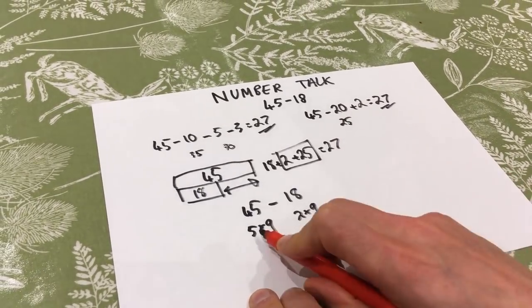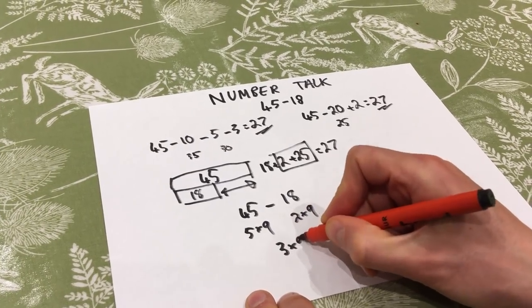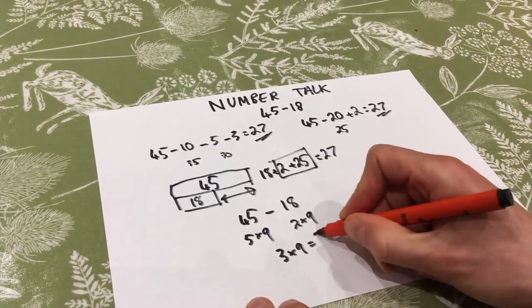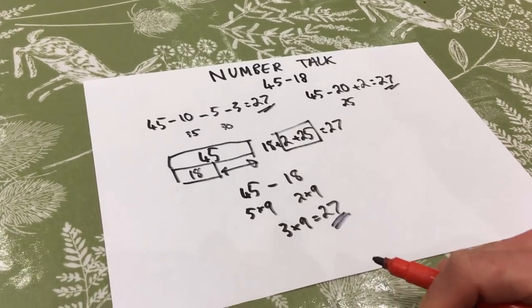And then I'm taking away 18 and 18 is two lots of nine. And so the difference between five lots of nine and two lots of nine, well, that is three lots of nine, which is 27 as well, which I just thought was brilliant.